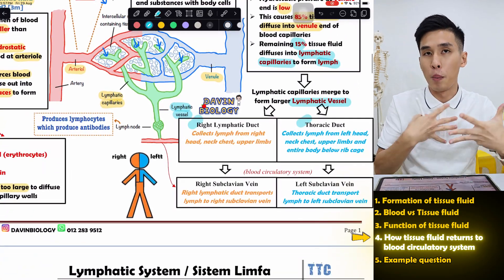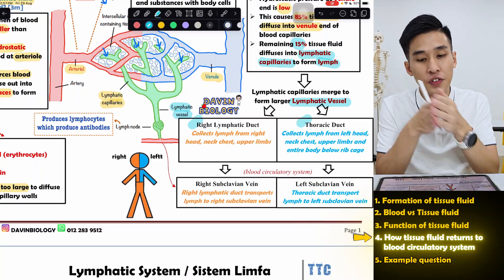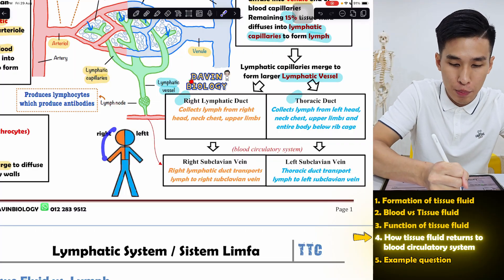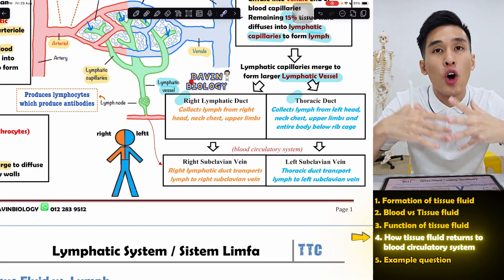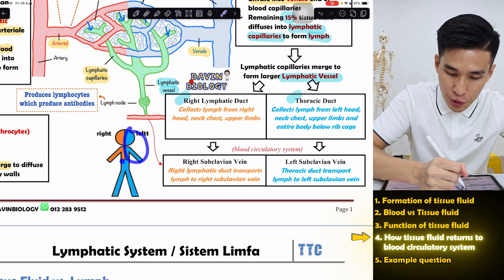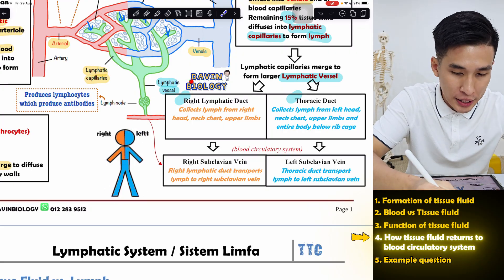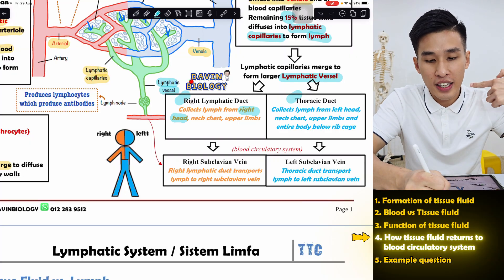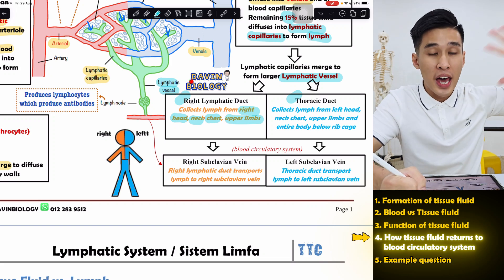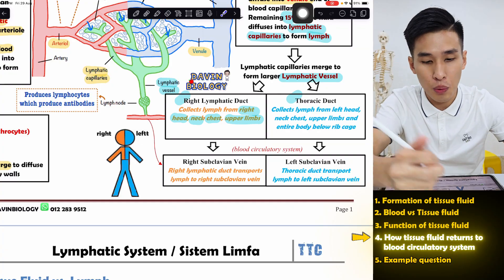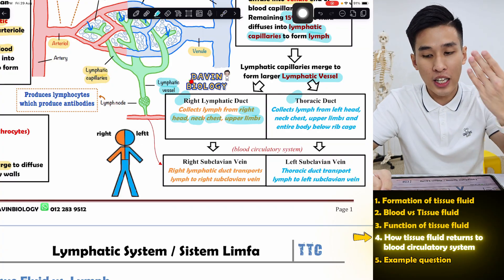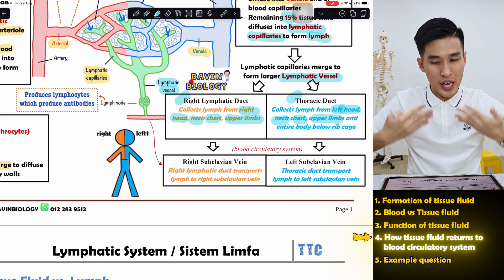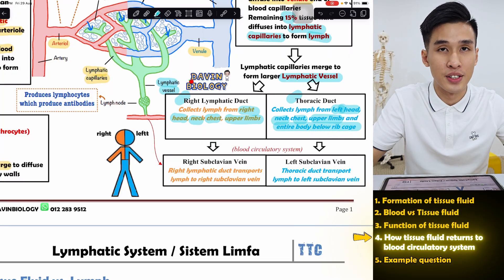Different parts of your body have lymph entering different lymphatic vessels. The right lymphatic duct collects lymph from your entire right upper body: right head, neck, chest, and upper limb. The thoracic duct collects lymph from the left head, neck, chest, upper limb, and also your entire body below the ribs.